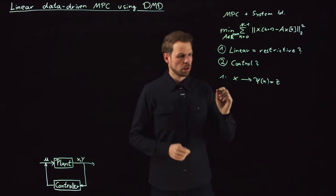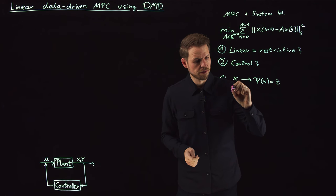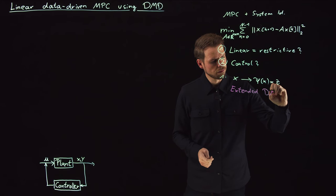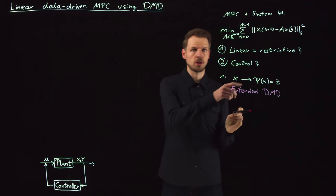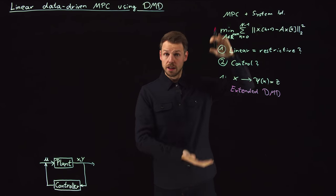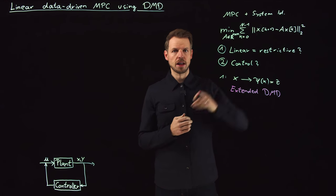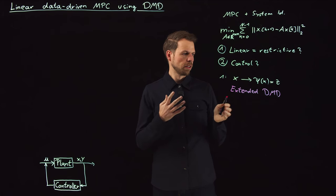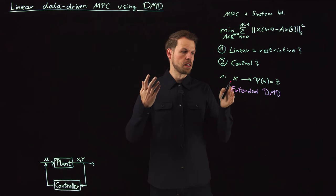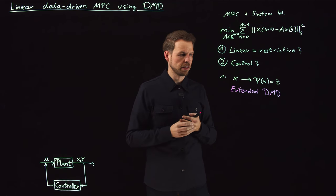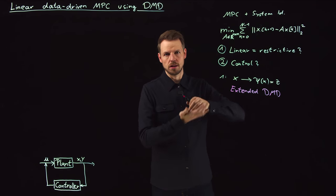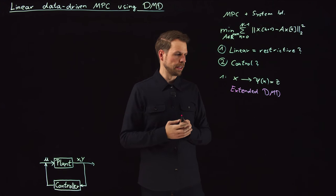And what you then get is what is called the extended DMD. Extended because you lift your state into a higher dimensional space. And the hope would be that a lifting into a higher dimensional space allows for a better identification of linear relations. That this can be seen in an analogous fashion to support vector machines, where you lift your data in order to find a linear classifier for a nonlinear data set. And here you lift your system state to find a linear dynamical relation, whereas in the original state space, the system may not be linear.